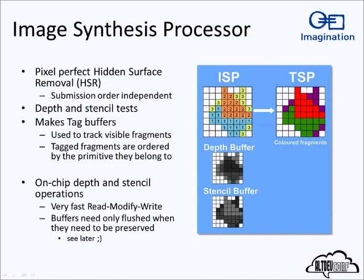The next step after the parameter buffer is the image synthesis processor. It does hidden surface removal plus depth and stencil tests — and because we're tile-based, we can do this entirely on chip, so there's no reading in and out of depth or stencil buffers kept in main memory. Once a fragment passes all these tests, we put it into a tag buffer — a way of grouping fragments that are actually going to be processed into coherent sets, possibly with the same shader, same texture, or similar state, so they can be processed more efficiently when passed to the TSP.